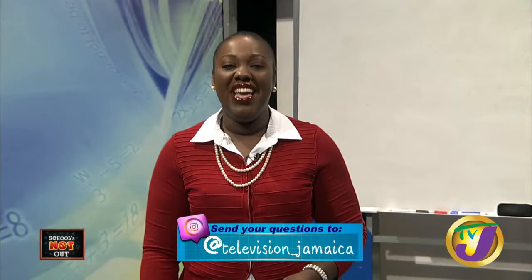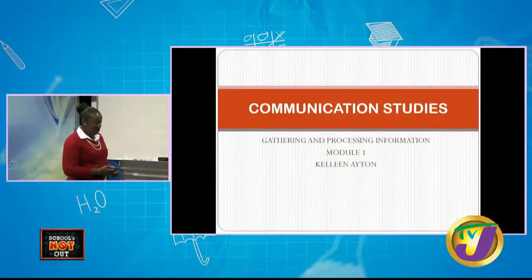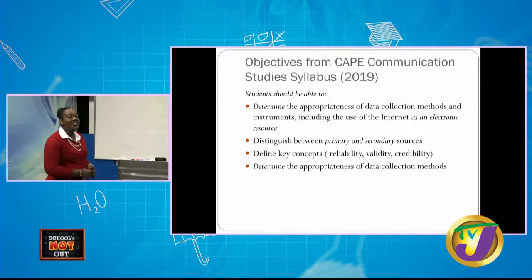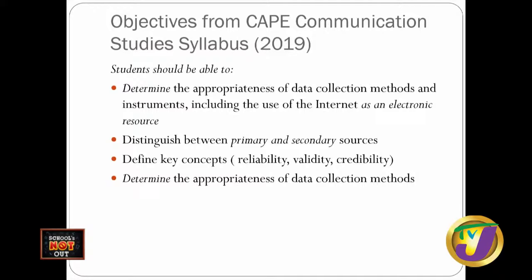Today's lesson is Communication Studies. We will be focusing on Module 1: Gathering and Processing Information. Our objectives from the CAPE Communication Studies Syllabus 2019 require students to be able to determine the appropriateness of data collection methods and instruments, including the use of the internet as an electronic resource, and to distinguish between primary and secondary sources.